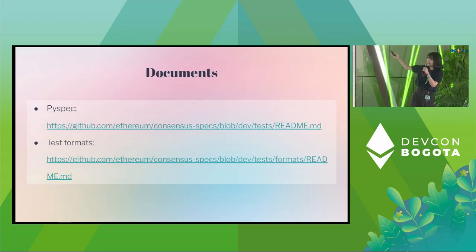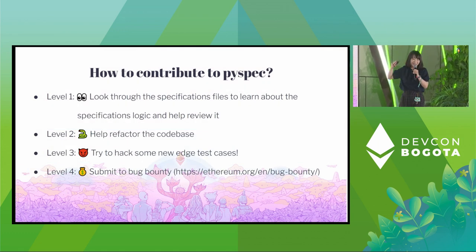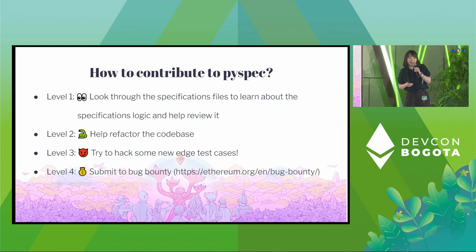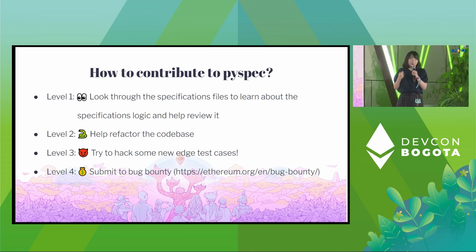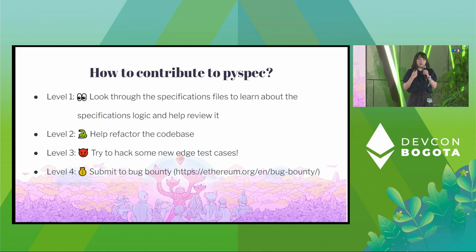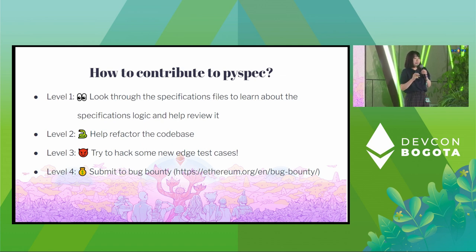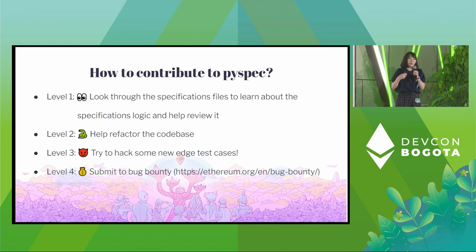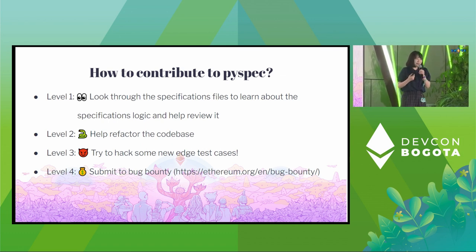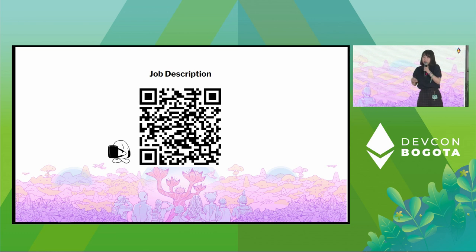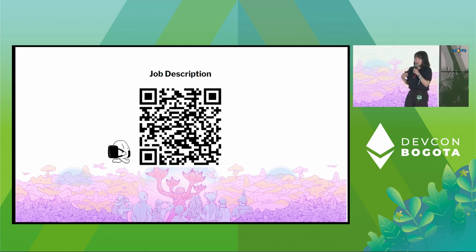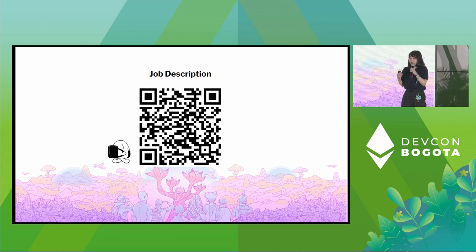For documentation, you can check the URLs shown. This is the most important page: how to contribute to PySpec. If you are interested in helping with the consensus layer, PySpec is a really good place to start learning and contributing. There are different labels you can participate in, from just fixing a typo to submitting a bug report. If your contribution gets accepted, the Ethereum Foundation will be happy to give you rewards. We are also looking for in-house resources for PySpec implementations, so feel free to reach out to me if you want to participate or have any questions.